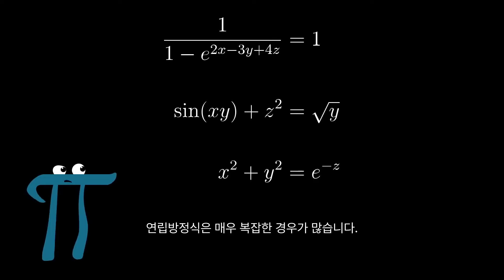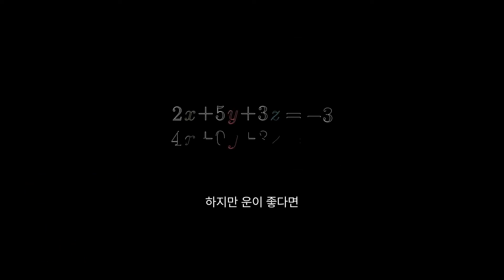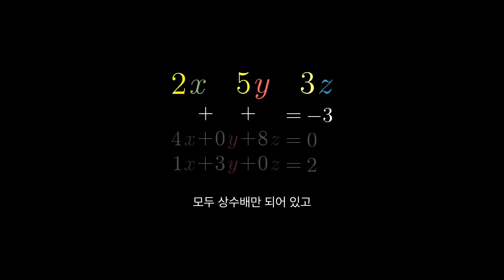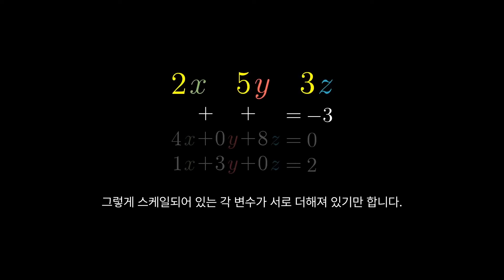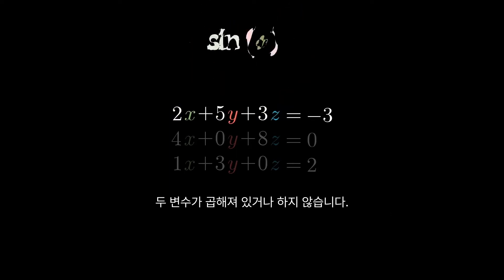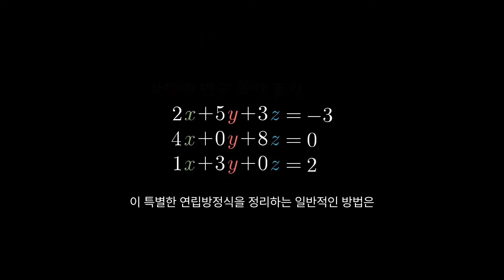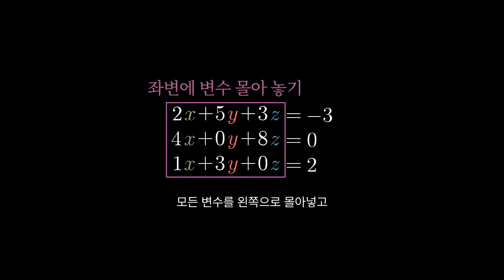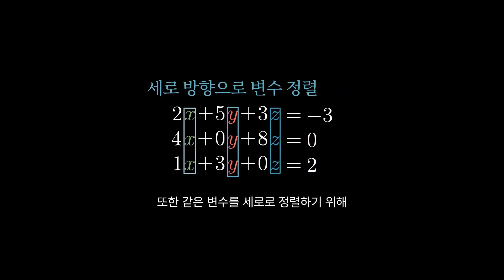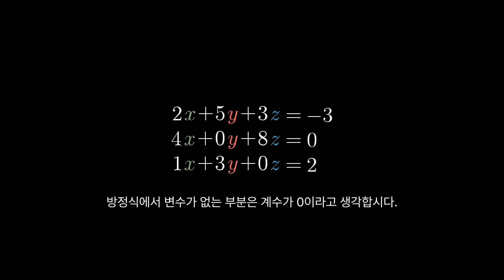In a lot of situations, those equations can get very complicated, but if you're lucky, they might take on a certain special form. Within each equation, the only thing happening to each variable is that it's scaled by some constant, and the only thing happening to each of those scaled variables is that they're added to each other. So no exponents or fancy functions or multiplying two variables together. The typical way to organize this sort of special system of equations is to throw all the variables on the left and put any lingering constants on the right. It's also nice to vertically line up the common variables, and to do that, you might need to throw in some zero coefficients whenever the variable doesn't show up in one of the equations.